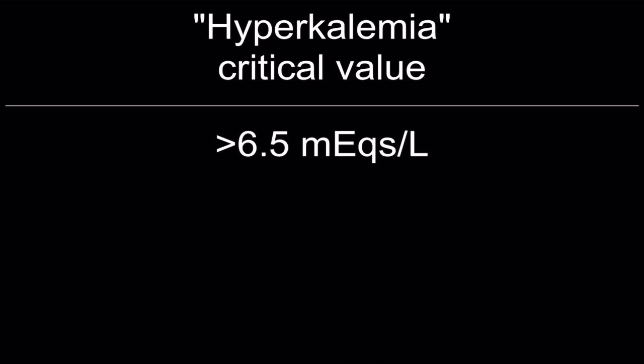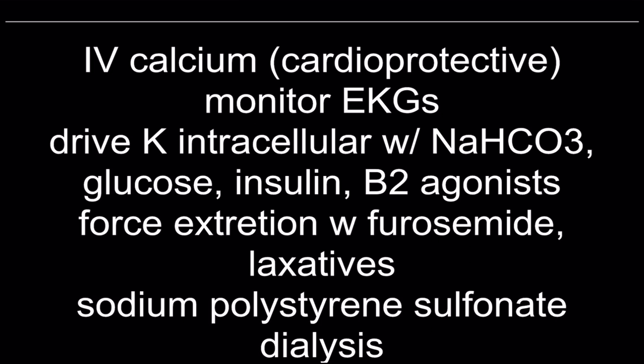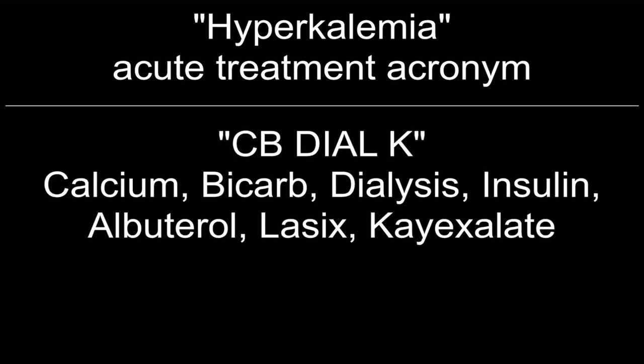Hyperkalemia critical value: greater than 6.5 milliequivalents per liter. Treatment: IV calcium for cardioprotection, monitor EKGs, drive potassium intracellular with sodium bicarb, glucose, insulin, and beta-2 agonists. Force excretion with furosemide, laxatives, sodium polystyrene sulfonate, or dialysis. Acute treatment acronym: CB DIAL K — Calcium, Bicarb, Dialysis, Insulin, Albuterol, Lasix, and Kayexalate.